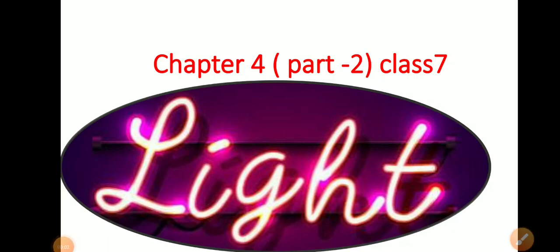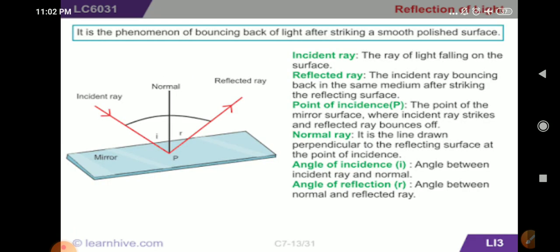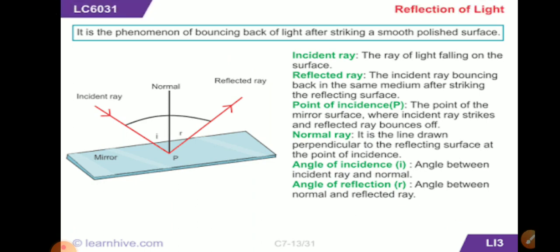Welcome class 7th. We were doing chapter 4, Light, and today we are going to continue the same chapter. As you know, in this chapter we have studied what is light, how light enables us to see different objects around us, what is reflection, and how many types of reflections are there based on the nature of the surface.